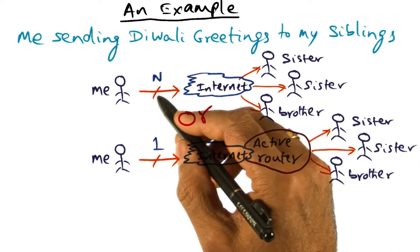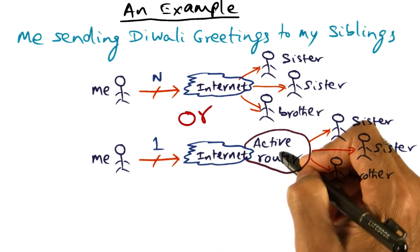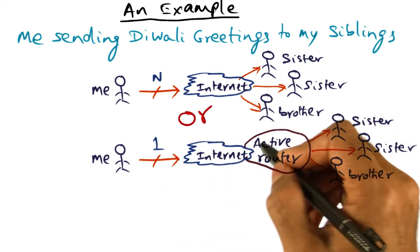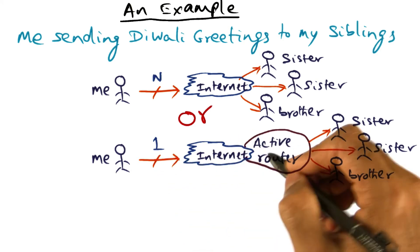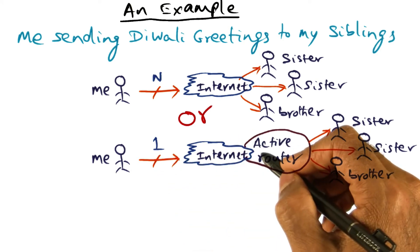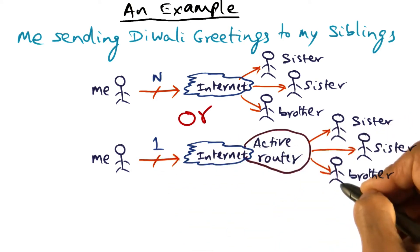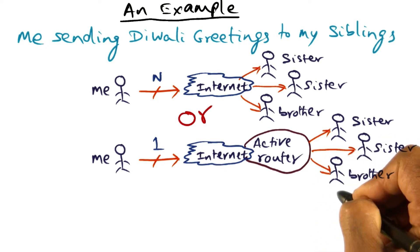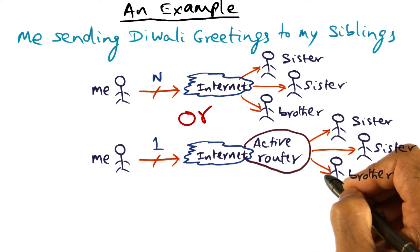I don't have to send N messages. I can send one message, and finally, at or close to the destination, an active node takes this one message, recognizes that this is intended for multiple recipients, and demultiplexes them, and sends it to all the eventual recipients of this message.